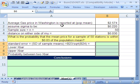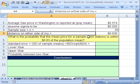Average gas prices in Washington is reported, this will be the population mean, $2.574. We'll assume sigma to be $0.22. Sample size will be 50, and the distance on either side of mu, meaning we want to go 3% below and 3% above.